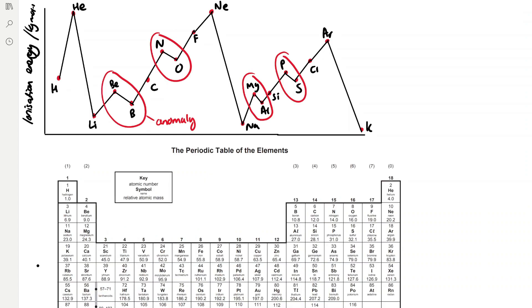The graph represents the periodic trends in ionisation energies. Going across the period from hydrogen to helium, ionisation energy increases. Going down a group from helium to lithium, ionisation energy decreases rapidly as a new energy level is added, increasing shielding and atomic radius, which decreases nuclear attraction to the outer shell electrons quickly. Across the period from lithium to neon, ionisation energy increases again. From helium to neon going down the group, we should see a decrease in ionisation energy.